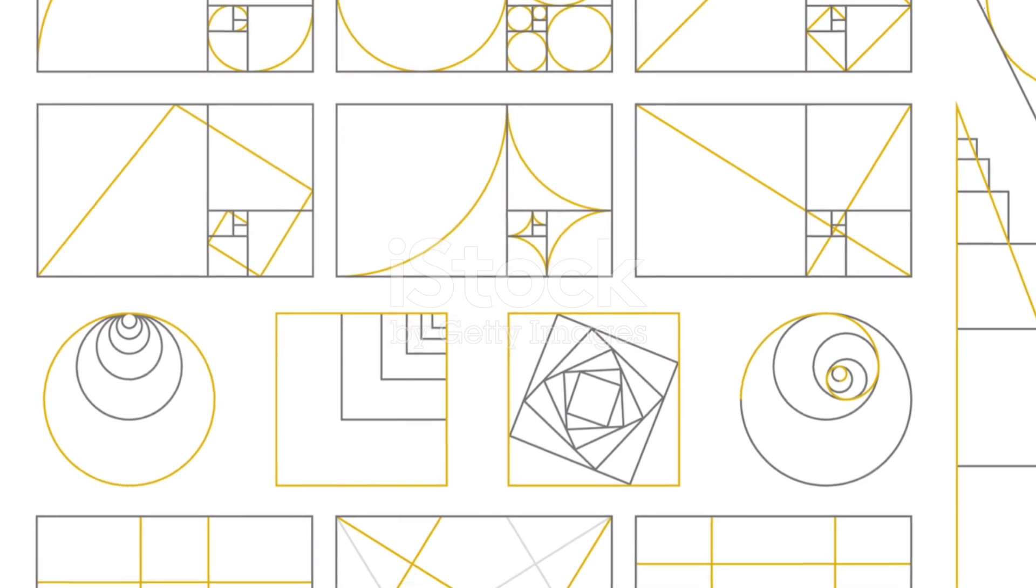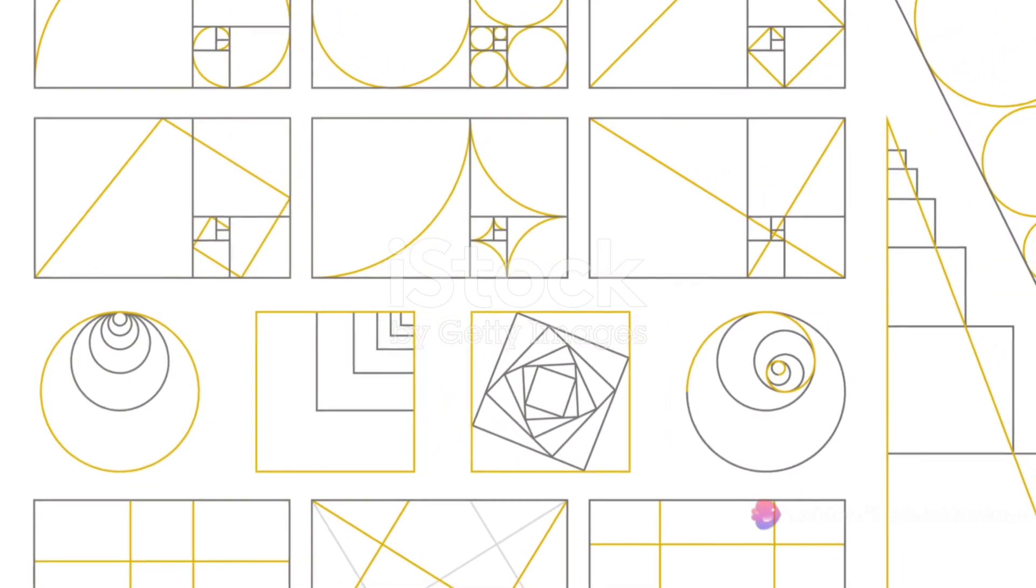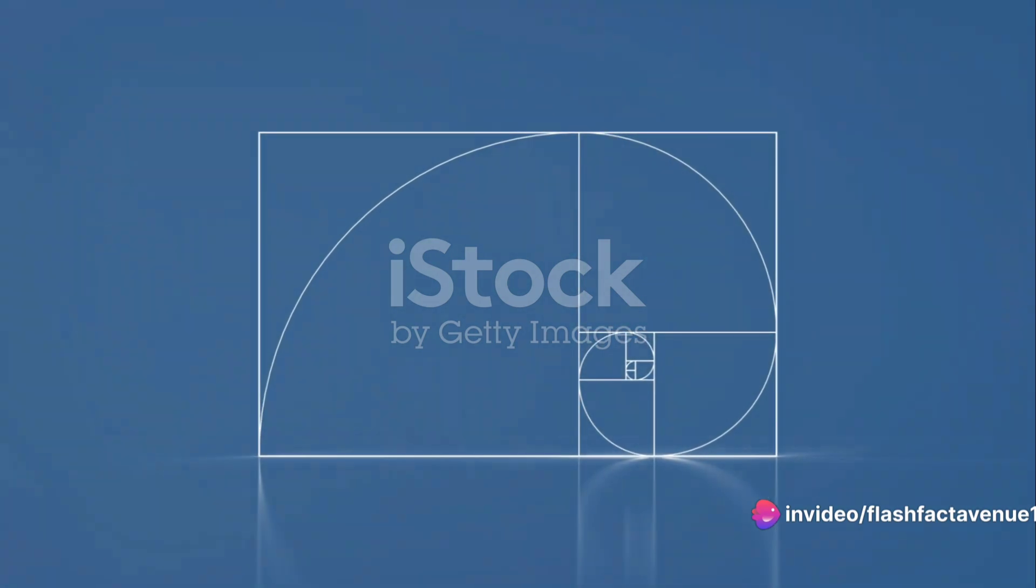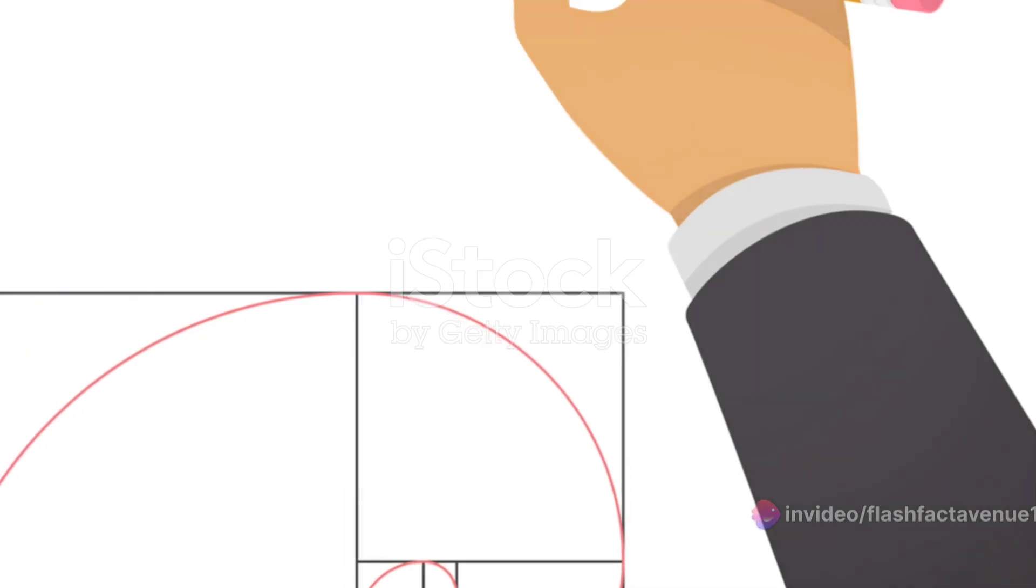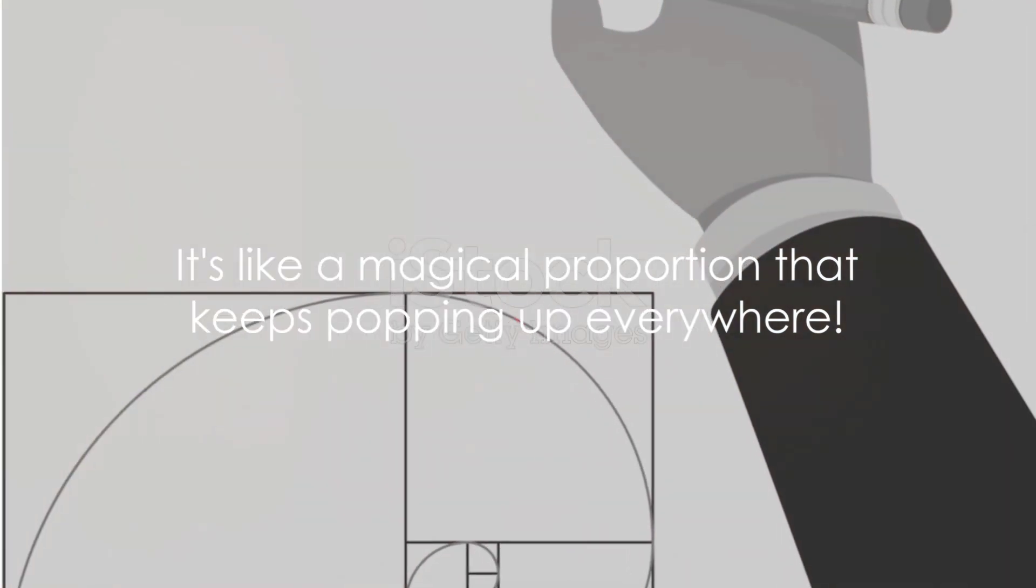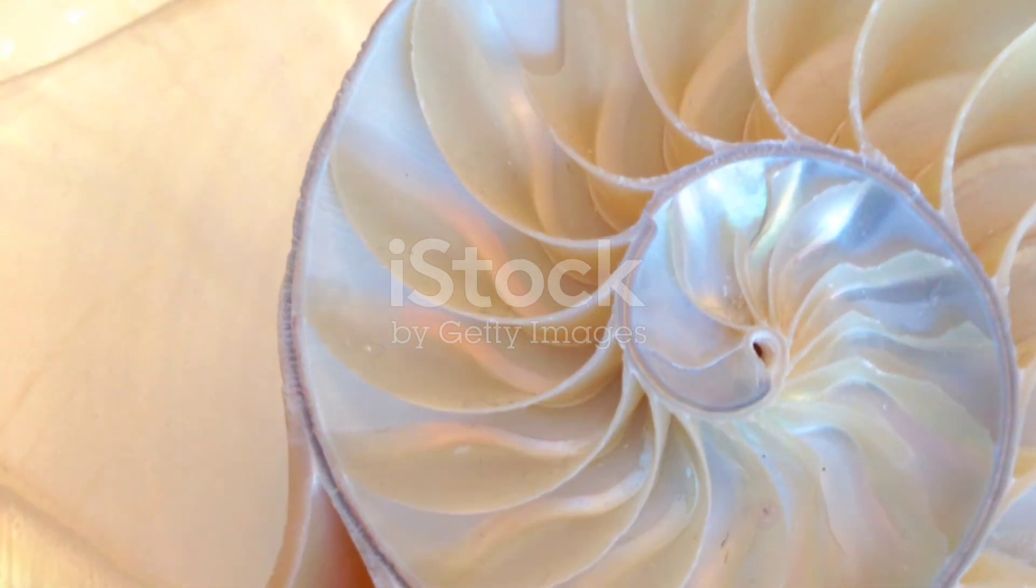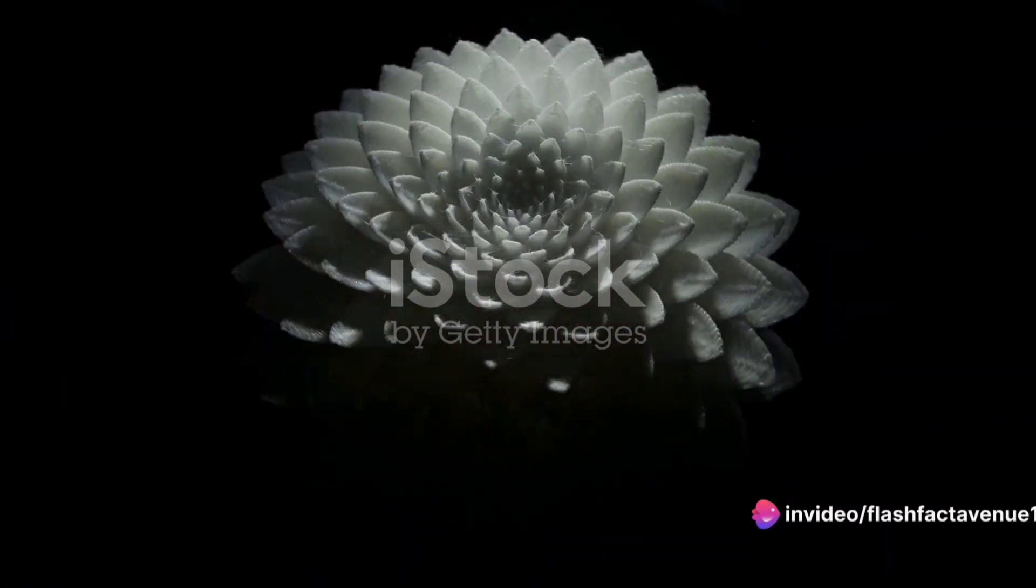But what is the golden ratio? It's a unique proportion that appears when a line divided into two sections, A and B, has a specific ratio between its whole length, A plus B, and the larger segment, A, equal to the ratio of the larger segment, A, to the smaller segment, B.